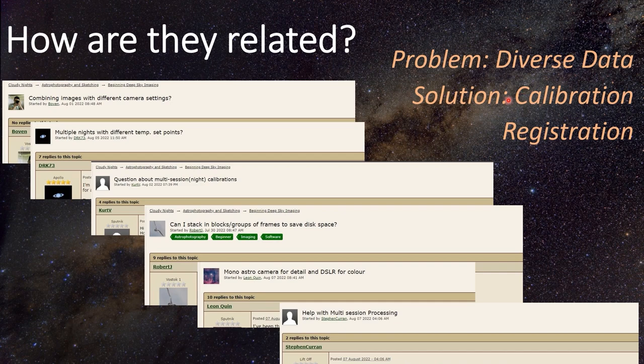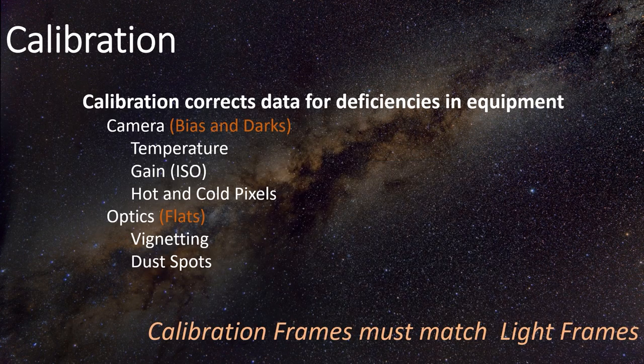The solution when you're using diverse data is in the calibration and the registration. Calibration corrects for defects and deficiencies in equipment using three types of calibration images: your bias, dark, and flat. Your bias and darks correct for errors in the camera — temperature differences, gain or ISO differences, and hot and cold pixels. Your optics are corrected by flats, which include vignetting and dust spots.